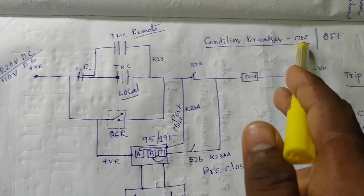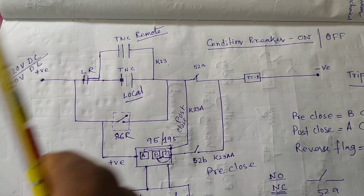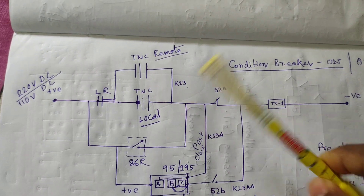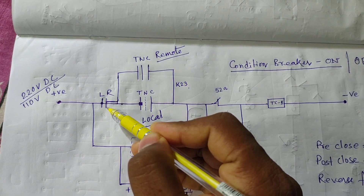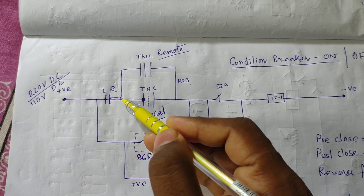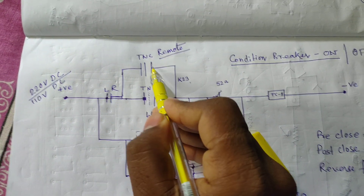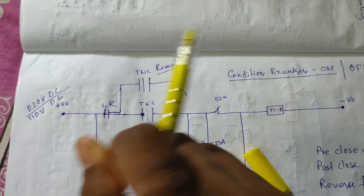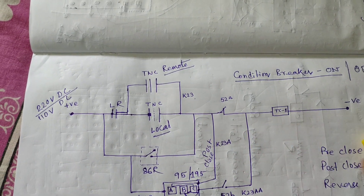First option is breaker in on condition. If we are providing the trip pulse from remote, we should give the local remote selector switch to the remote position. After selecting remote position, this positive pulse from the breaker is going through this path up to this point. If we trip the breaker, we have to turn the pistol grip mechanism to the trip position. Then the DC will flow through this path and the breaker will be tripped accordingly.